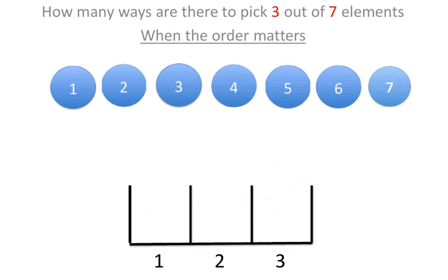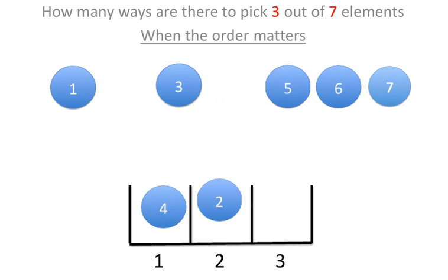Let's say we put this. For the second one, we have six, and for the third one, we have five. So the total that we have in this case is seven times six times five.